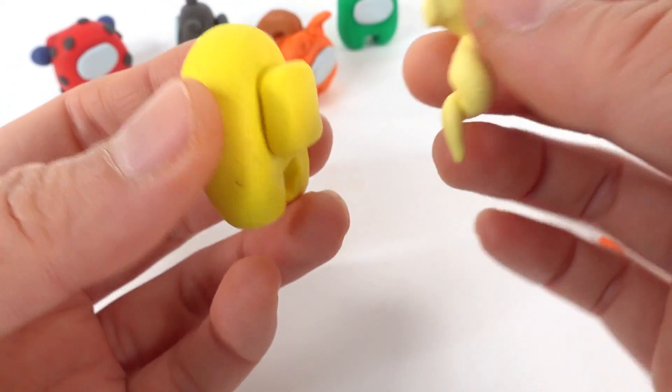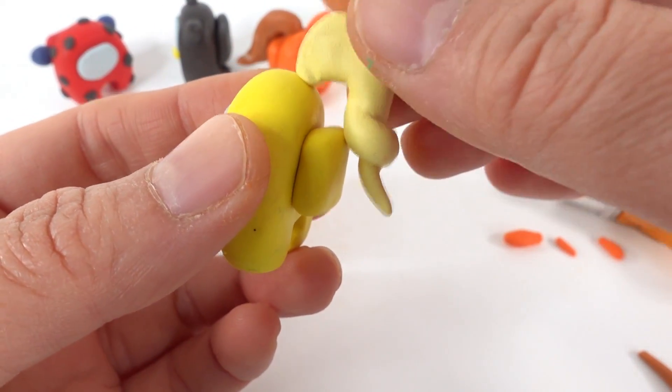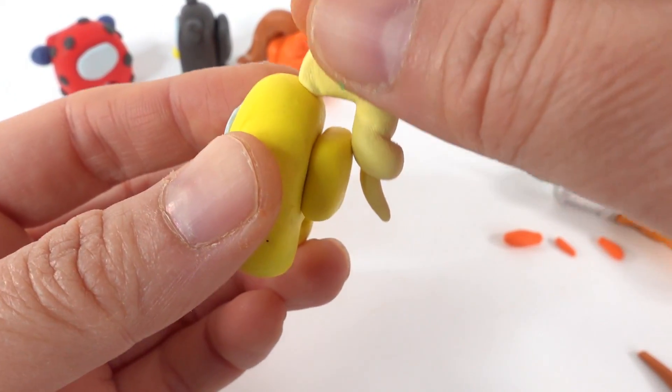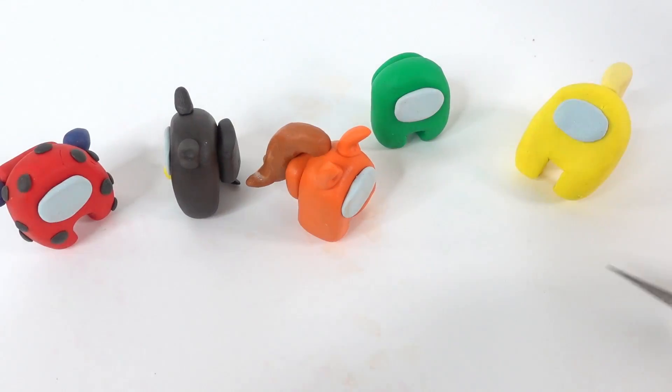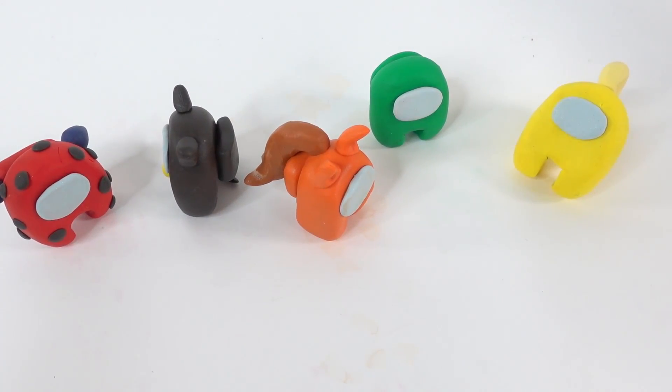And finally, with Queen Bee, we're going to add her ponytail. Alright, and we're done. Let's go ahead and bake them.